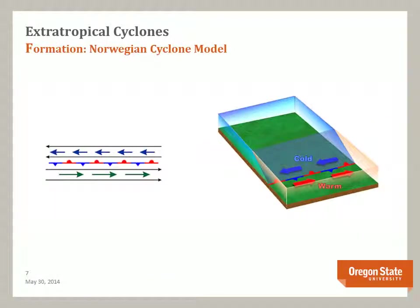Now let's look at one model for the formation of extra-tropical cyclones. This is called the Norwegian model, in honor of Norwegian meteorologists who conceptualized these steps. The following text and images are from the website Jetstream Online School for Weather. In all of the slides, the image on the left is a map view of the frontal system, and the image on the right is a three-dimensional view of the system.